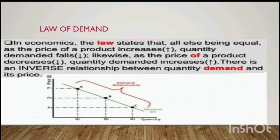If you look at the curve, it is downward sloping. When the price rises, the quantity demanded of that product decreases. But when price falls, the quantity demanded increases. If we add all these locus points, we get a curve which is downward sloping, or a negative slope. This is the law of demand. Thank you all.